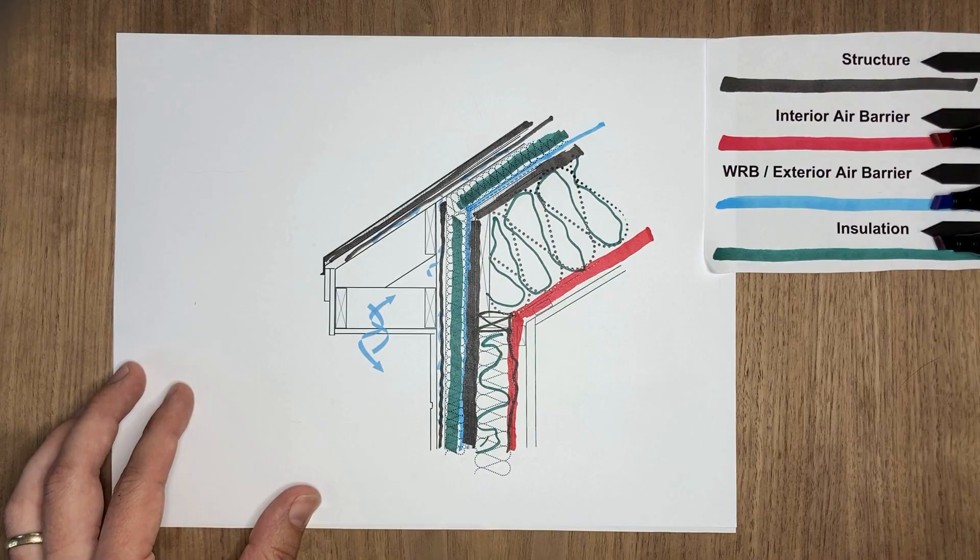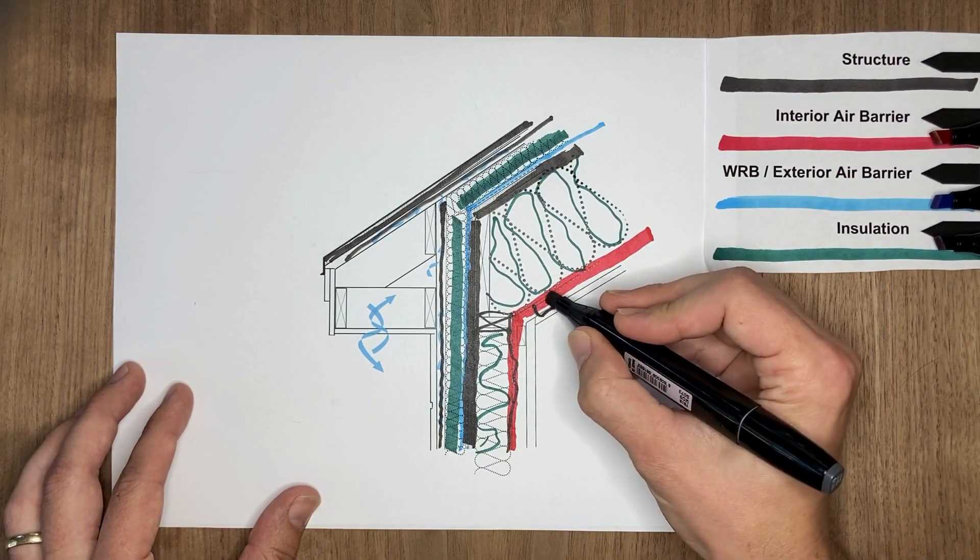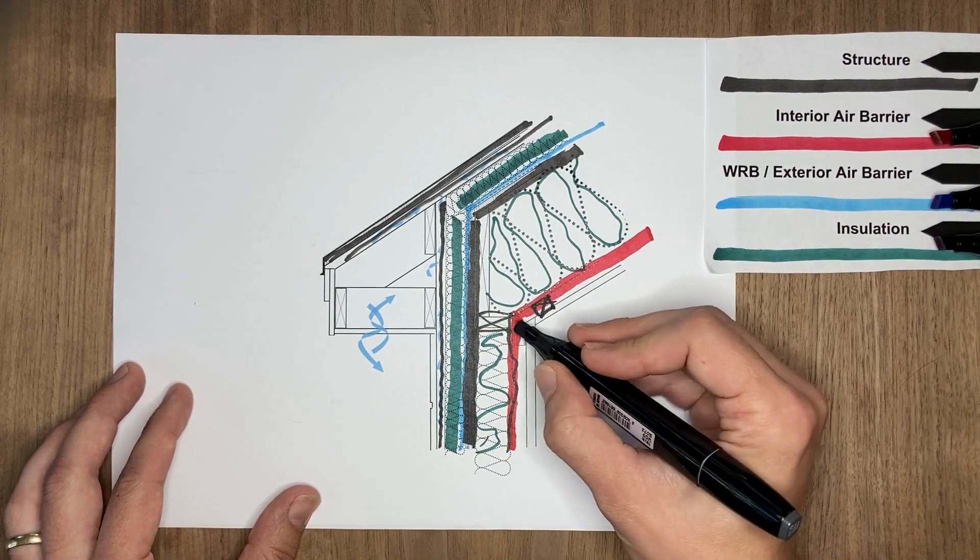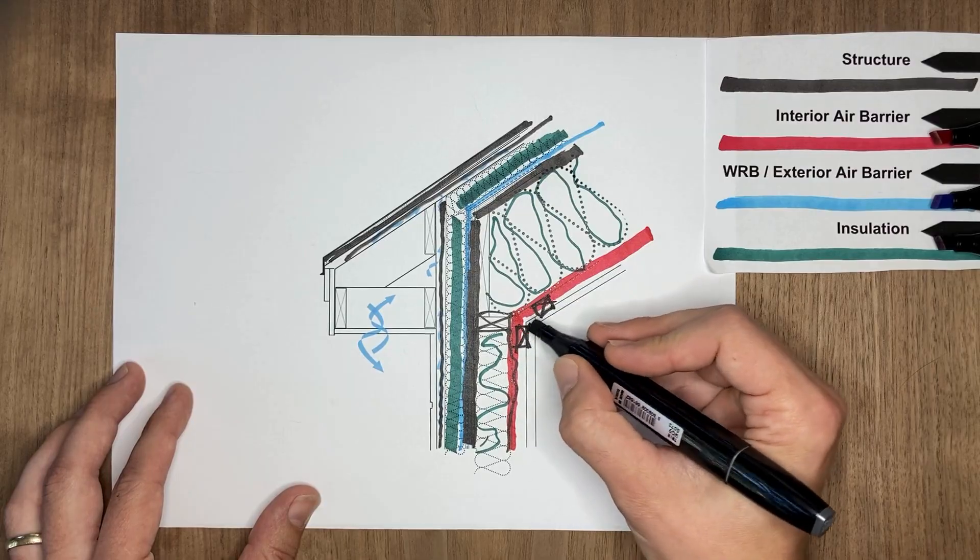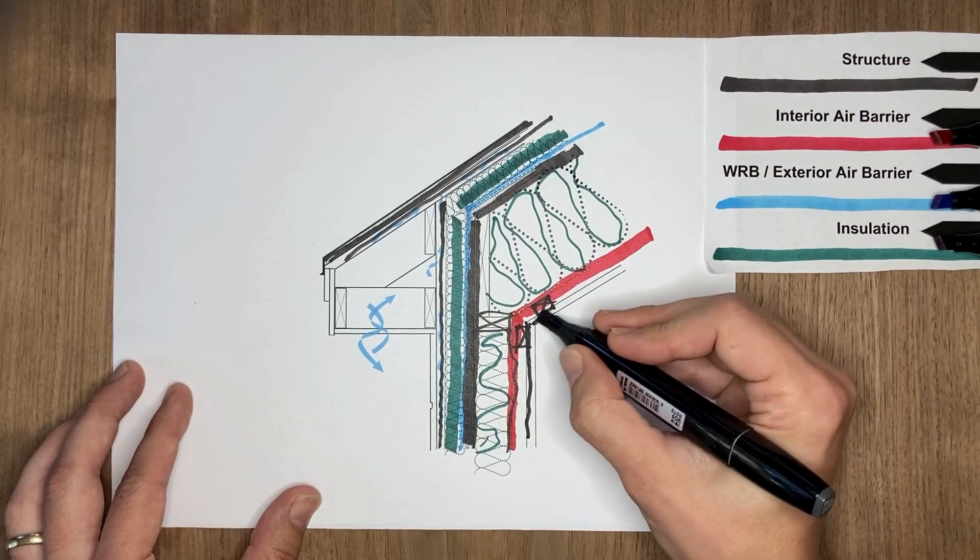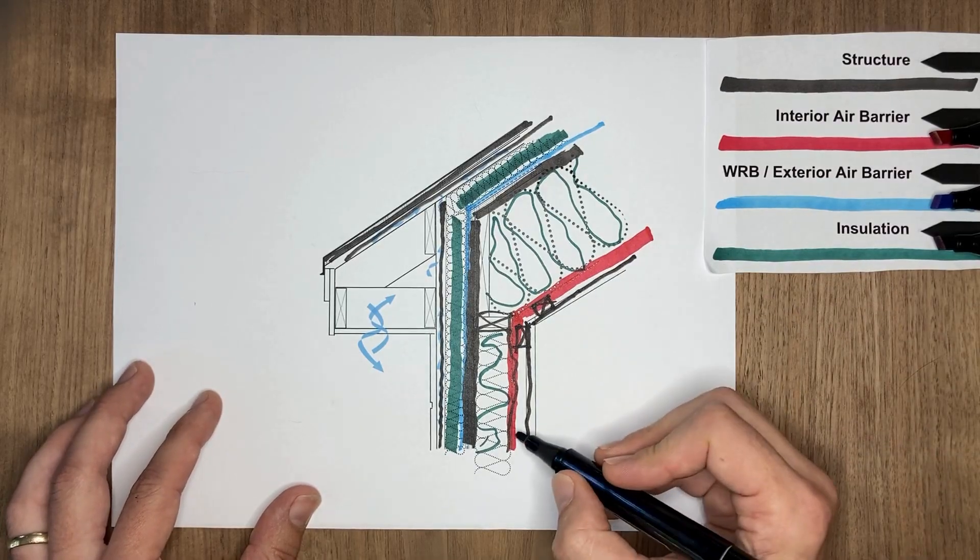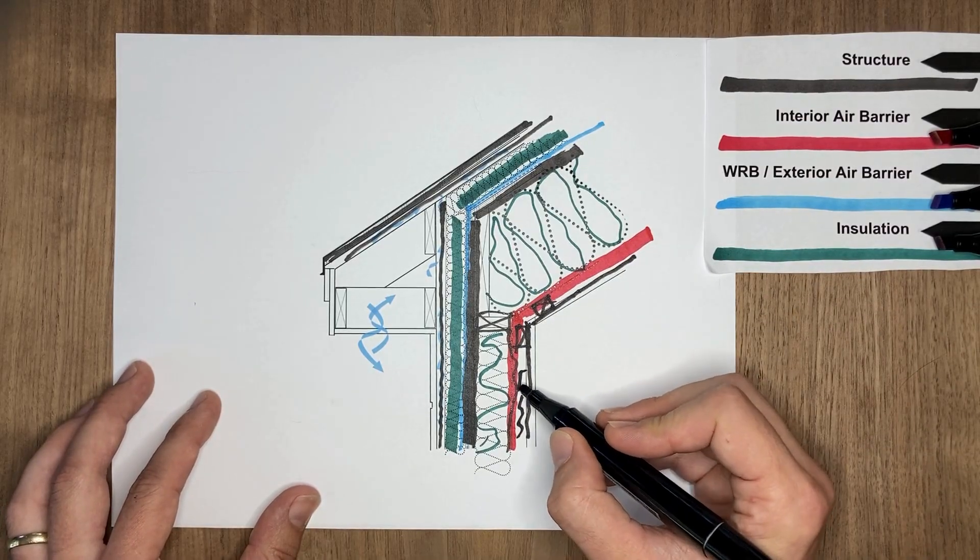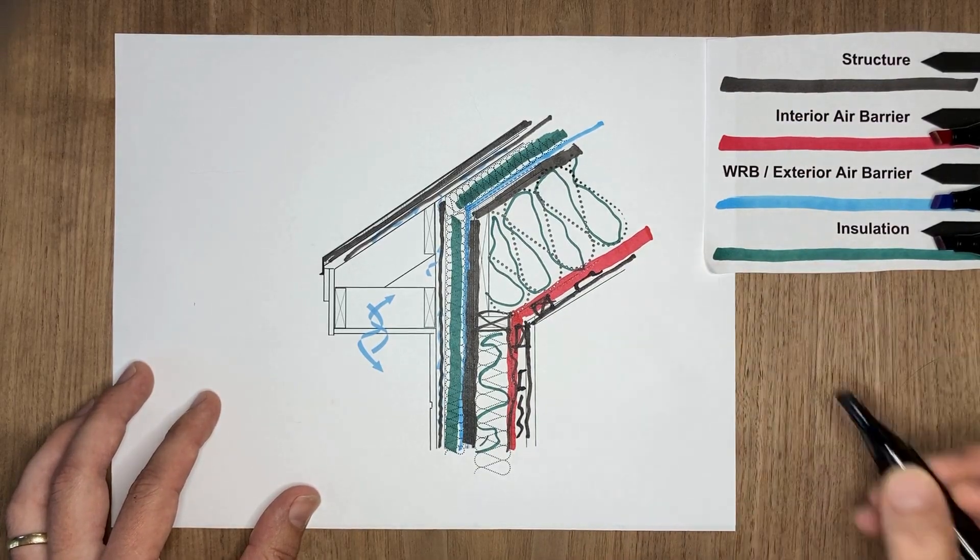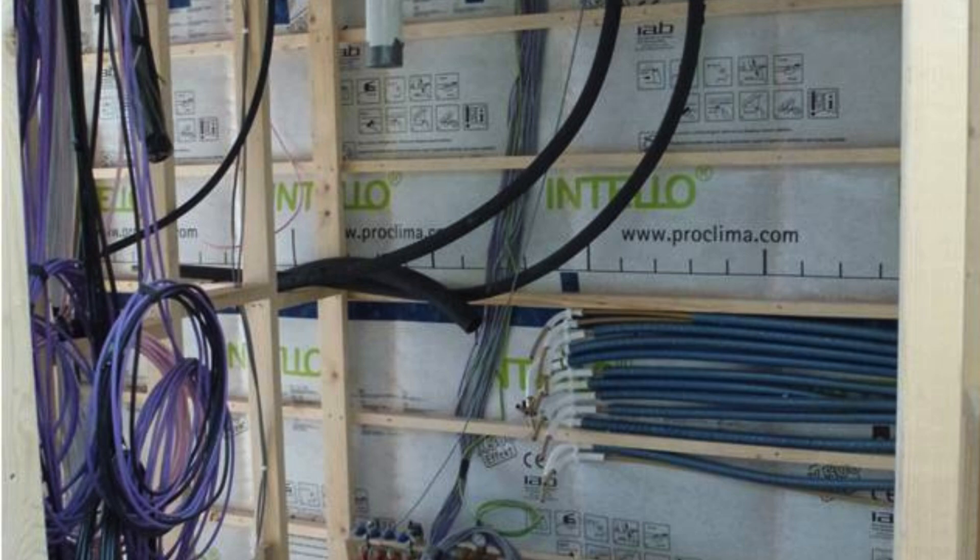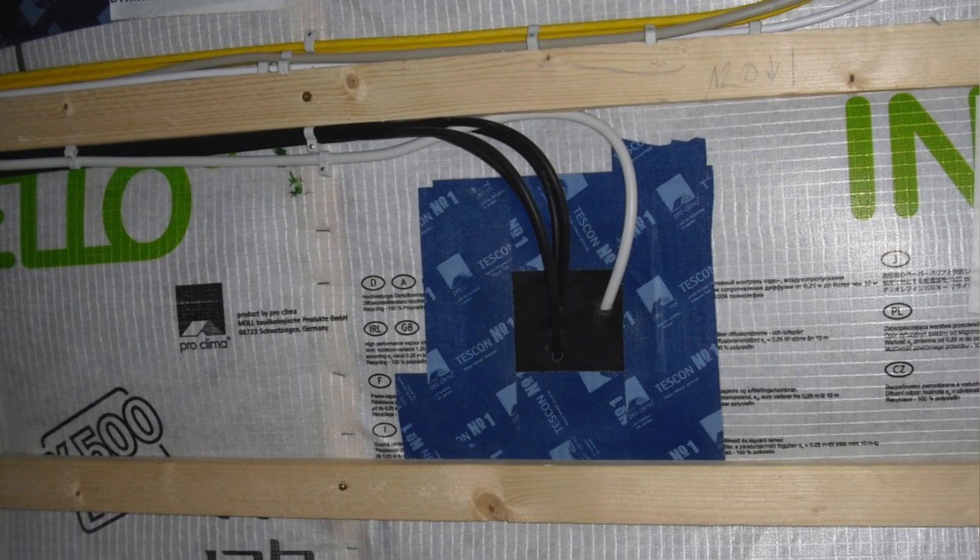That is directly behind our drywall. So we're sometimes including a service cavity. This is strapping between your drywall finish and that interior air barrier. It's creating a chase for your electrical components and your outlets or your can lights, but you can do without this. You would then just need an air seal around all of those outlets and other components that are penetrating that air barrier.